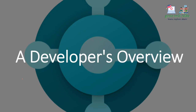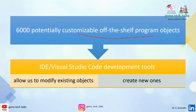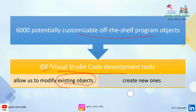From a developer's perspective, Business Central consists of almost 6,000 potentially customizable off-the-shelf program objects. The IDE used is Visual Studio Code, which allows us to modify existing objects — objects already created by Microsoft — and also create our own new objects.